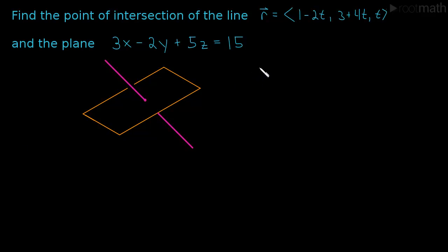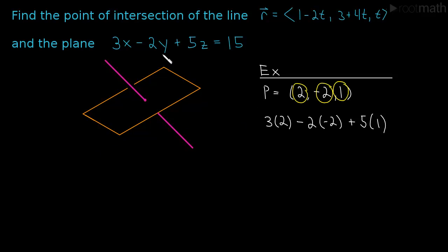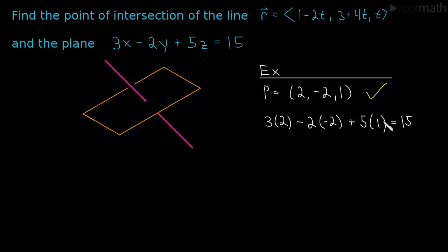Let's look at a quick example. The point (2, -2, 1) is a point in the plane. Let's check: we plug in 3 times 2, minus 2 times -2, plus 5 times 1. That gives us 6 plus 4 is 10, plus 5, which is 15. So that checks out — this is a point in the plane.